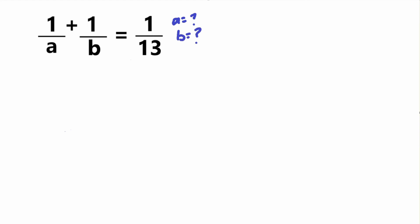Before we get started, I'm going to lay some ground rules. Those rules are that a and b are both greater than zero — both positive values — and they are both integers. So that means they are whole numbers and not decimals. So let's go ahead and get started.